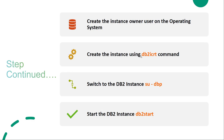The user ID you specify in the db2icreate command becomes the instance owner. First create the user ID on the target machine, then use the command db2icreate to create the instance. Once the instance is created, switch to that instance using su -dbp. When you switch to that user account you are automatically connected to that instance, and then run db2start to start the DB2 instance.